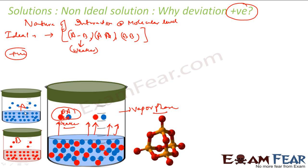If A and B are held tightly together, A will not allow B to escape and B will not allow A to escape — both stay in solution and vapor pressure goes down. But if A and B are not held tightly and do not have strong interaction between them, both will escape. So in positive deviation, the A-B force of attraction is weaker, making it easier for A and B to escape, increasing the vapor pressure above the expected value.